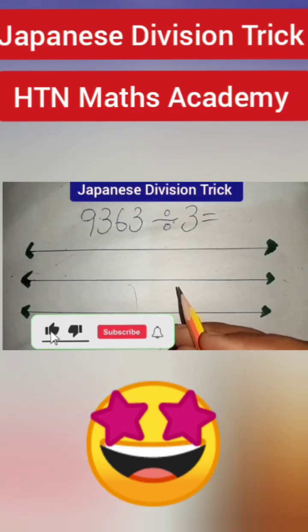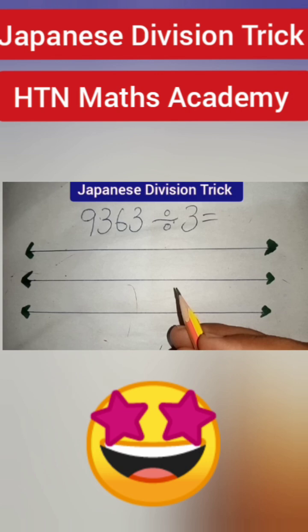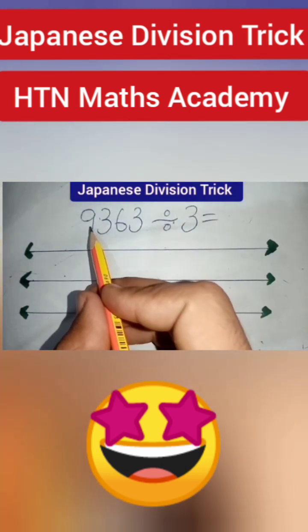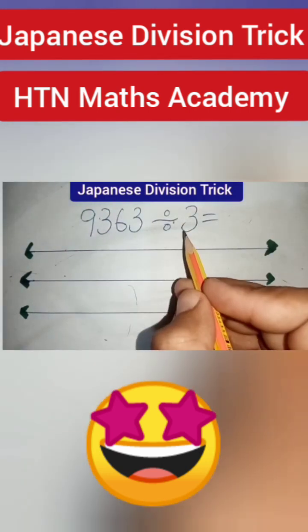Welcome to my YouTube channel HTN Maths Academy. Today we solve the given question by Japanese division trick. The given number is 9363 divided by 3.